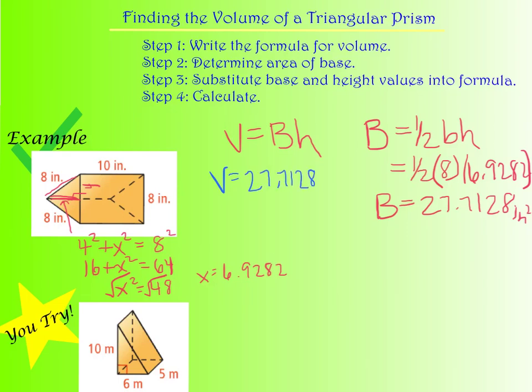Now I need to insert that into my formula here. So I get V equals 27.7128 inches squared, and I'm multiplying that by my height. Now remember, it kind of gets confusing when you're talking about the height of your base, the height of your prism. This height is the height of my prism, which is defined as the distance between my two bases. So that's this distance right here, which is ten inches. So I need to multiply that value by ten, which gives me a volume of 277.1 inches cubed.